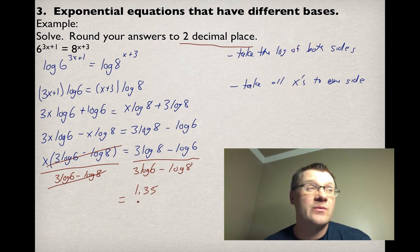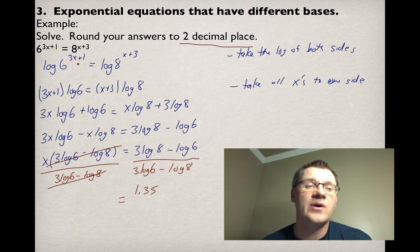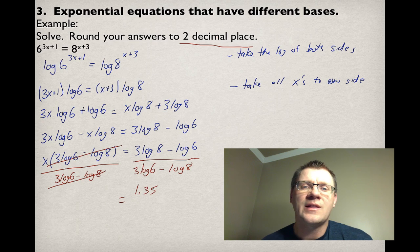If you wanted to, or if you needed to, or if they asked you to verify this as a solution, you would plug the 1.35 in for x. You should get two answers that are pretty close to being the same number. Because we've rounded it to two decimal places, we might not be as accurate as you want. You have to take into account that this is 6 raised to an exponent and 8 raised to an exponent, and these could be very large numbers. So the less accurate we are with our decimals in the exponent, these things are probably not going to be exactly the same number. But they'll be close enough for you to be able to verify that 1.35 is your answer.